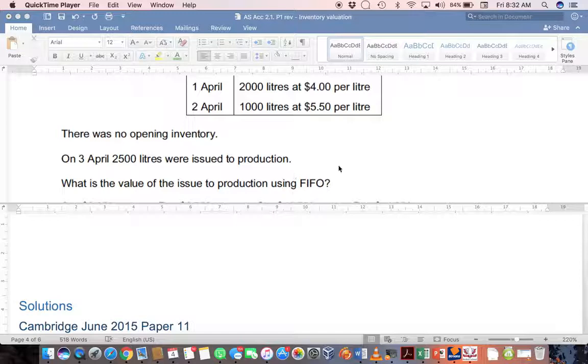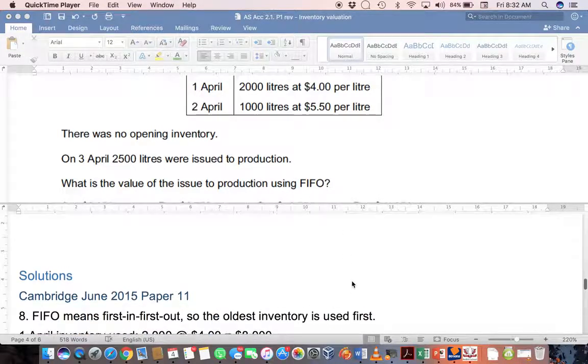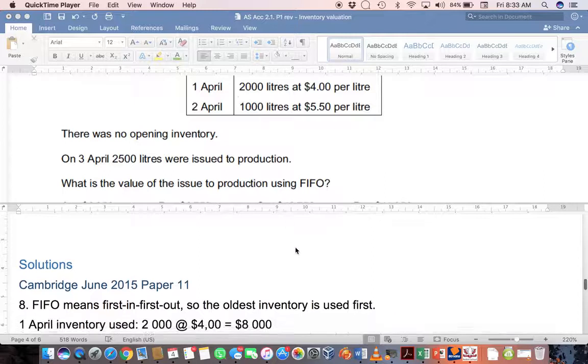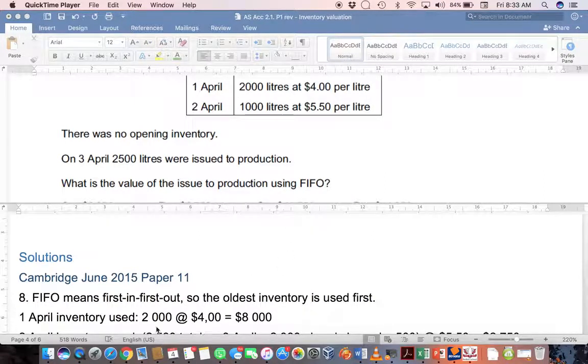If we are using FIFO, remember that FIFO means whatever came in first is the first that will go out, so the oldest inventory is used first. We're going to work from the top down. There was no opening inventory so we start with the 1st of April and use all 2,000 litres. So 2,000 at $4 means there will have been a cost of $8,000 associated.